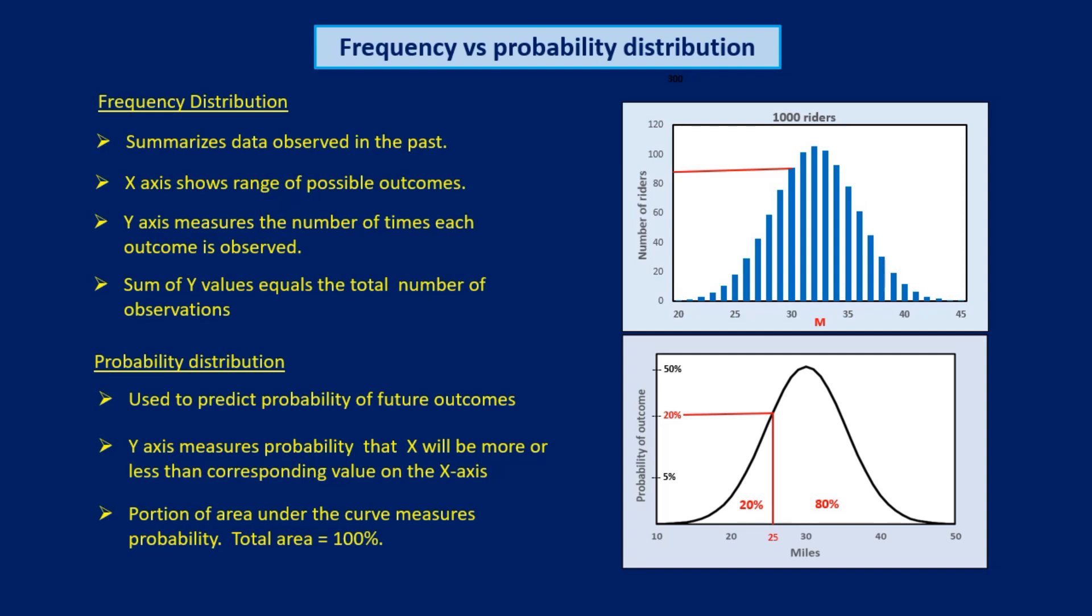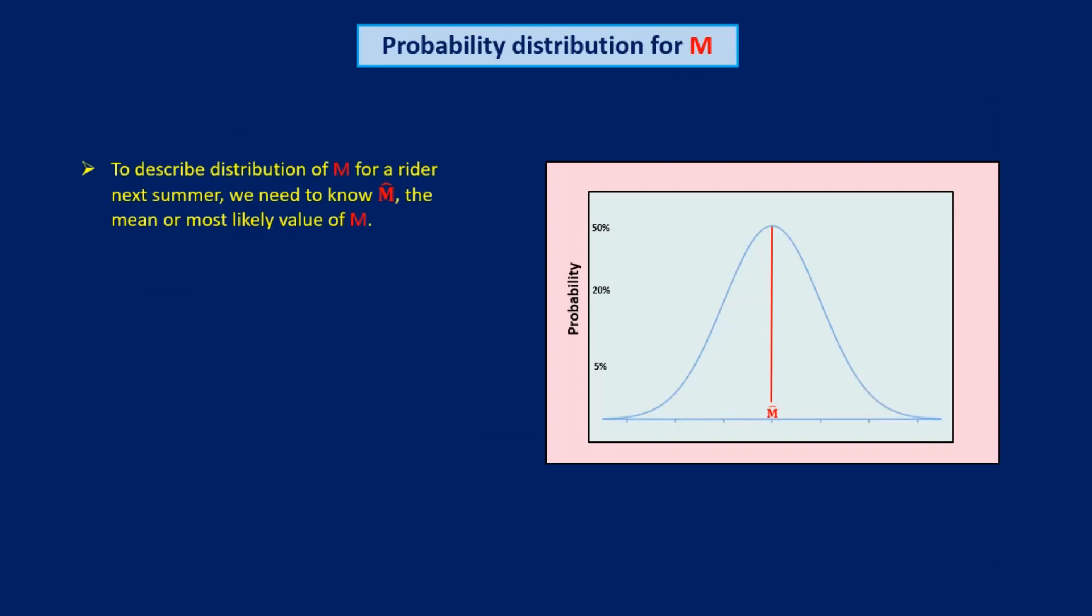The probability distribution of M-values for next summer's riders is the key for predicting rider performance. To build that distribution, we need to know two things. First, we need to know the mean or most likely value of M next summer. And from now on, I'll refer to the mean value of M in a distribution as M-hat. And I'll write M-hat by putting a hat on top of the M.